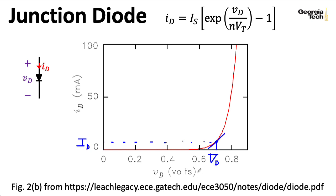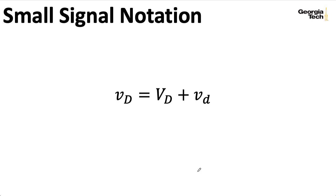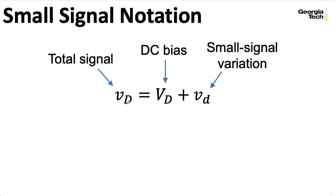This particular notation involving uppercase and lowercase letters is a notation that I picked up from Marshall, although I have seen it in some other places. So the idea here is that a lowercase letter with an uppercase subscript is going to represent the total signal. Uppercase everything represents our DC bias point, our quiescent operating point. And lowercase everything represents that small signal variation. So here we have the equation describing the voltage. And we have a similar equation describing the current.